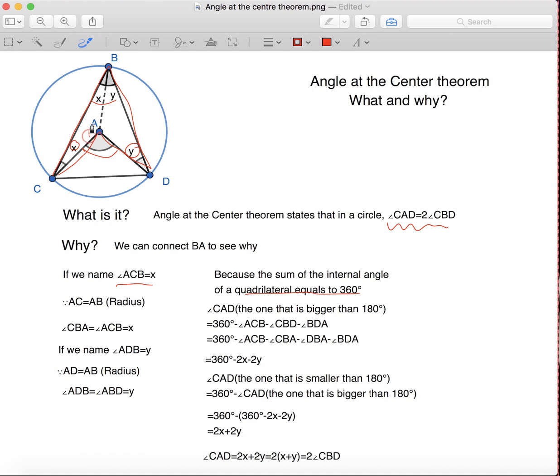the one that is bigger than 180, sum up to 360. And this equation can give us that the angle CAD, the one that's bigger than 180, equals to 360 minus angle ACB minus angle CBD minus angle BDA.